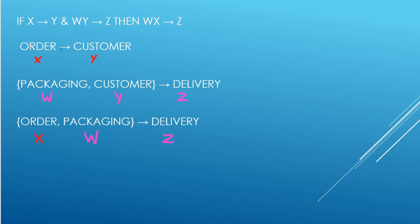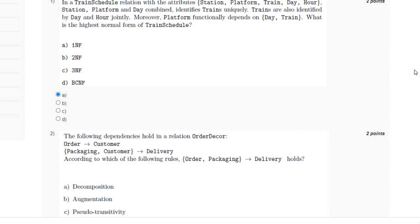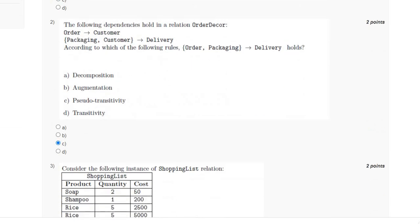In this example, customer is dependent on order, and delivery is dependent on packaging and customer. So order is similar to X, customer is similar to Y, packaging is W, and delivery is Z. According to the rule of pseudo-transitivity, W and X together are capable of finding Z. So for this, the answer is option C.